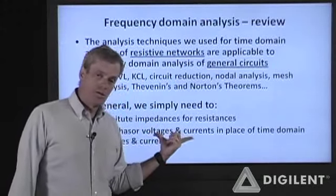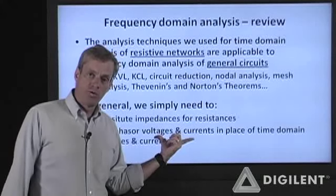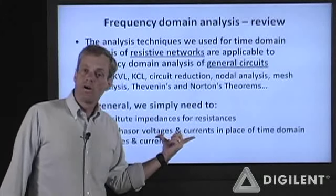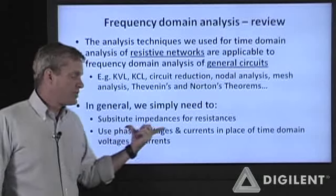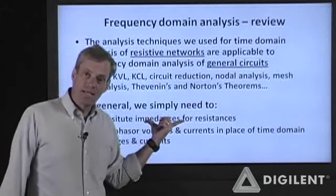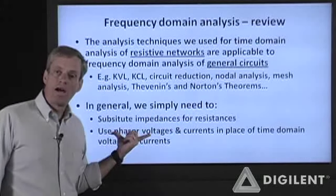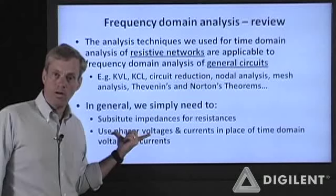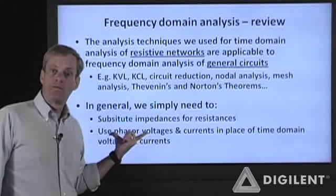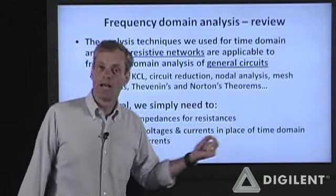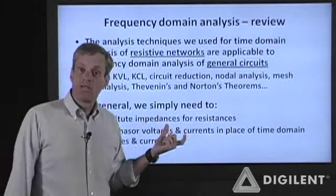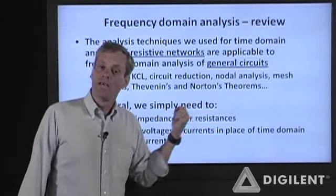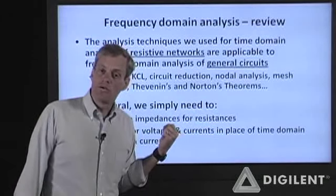In order to do that, we typically substitute impedances for resistances. The resistances become impedances, which are now complex values in general. We also have to use phasor voltages and currents in place of the time domain voltages and currents used for purely resistive networks. Phasors represent sinusoidally varying waveforms and are complex numbers. The difference is that phasors are associated with a sinusoid, while impedances are just complex numbers — they don't relate back to a sinusoidal function.